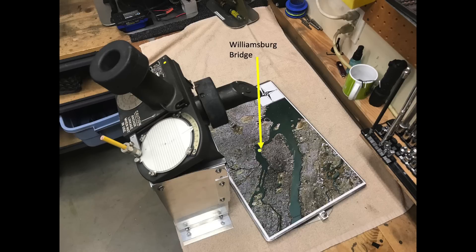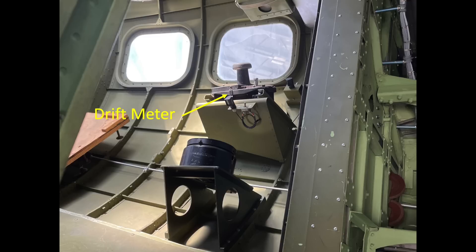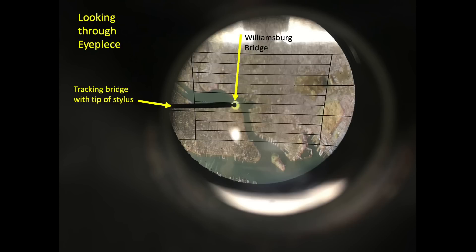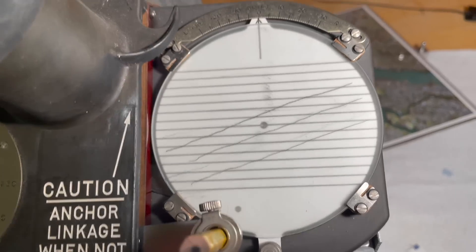A dot is placed over the Williamsburg Bridge for tracking. To find the bomber's drift, the navigator will inform the pilot to hold the bomber's airspeed, course, and altitude steady. He will deploy the B-5 drift meter into the slipstream, unstow the pencil and place it on the frosted glass, then fix and track an object on the ground with the pointer. In this example, the drift meter's pointer is tracking the Williamsburg Bridge across the optical head's field of view, while the pencil scribes a visible line into the etched glass at the same time. He will take multiple ground object fixes.